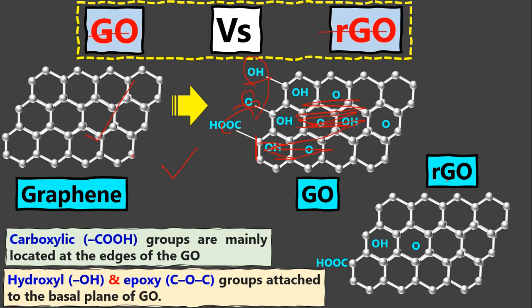What is the difference between GO and RGO? When we reduce the number of functional groups in graphene oxide, it becomes reduced graphene oxide. In graphene oxide we have a greater number of functional groups, while in RGO we have fewer functional groups — as shown in the figure, I put few here and many there.